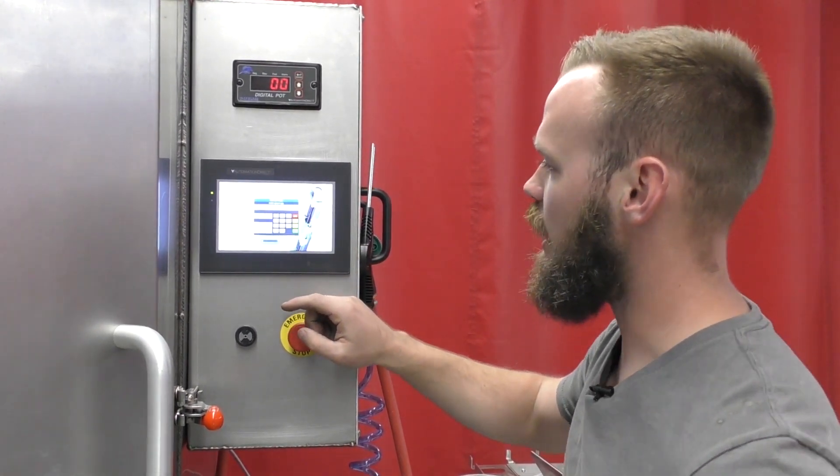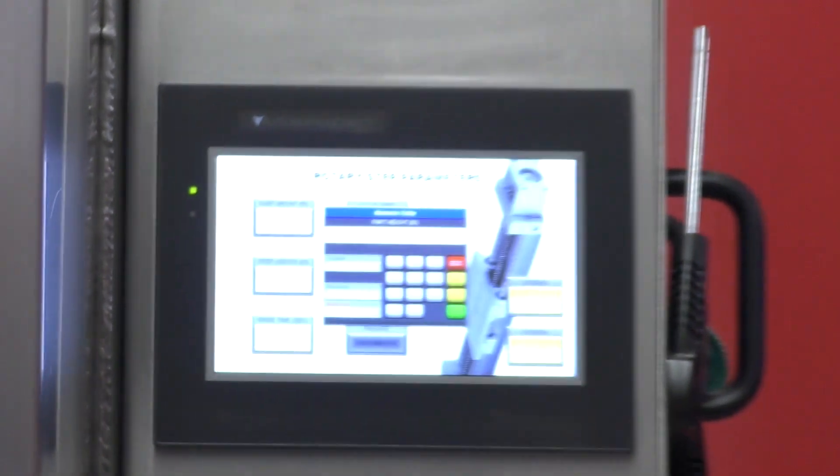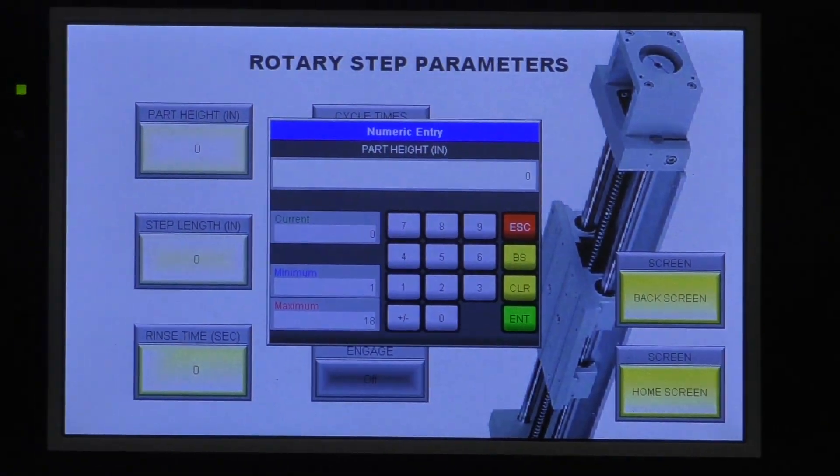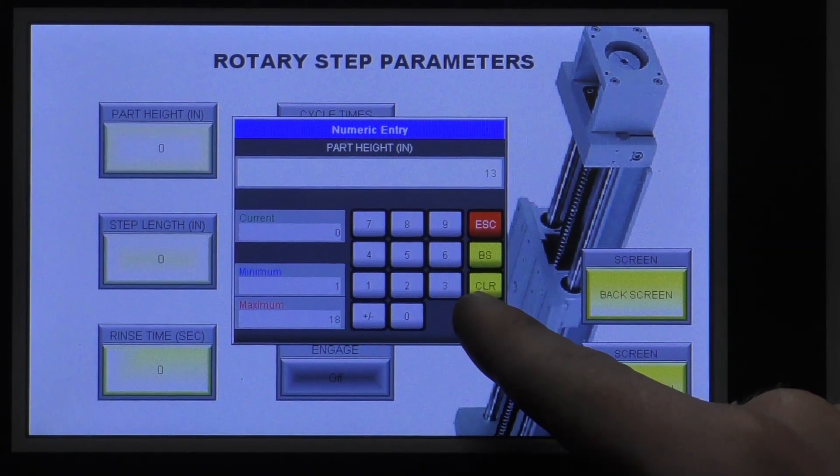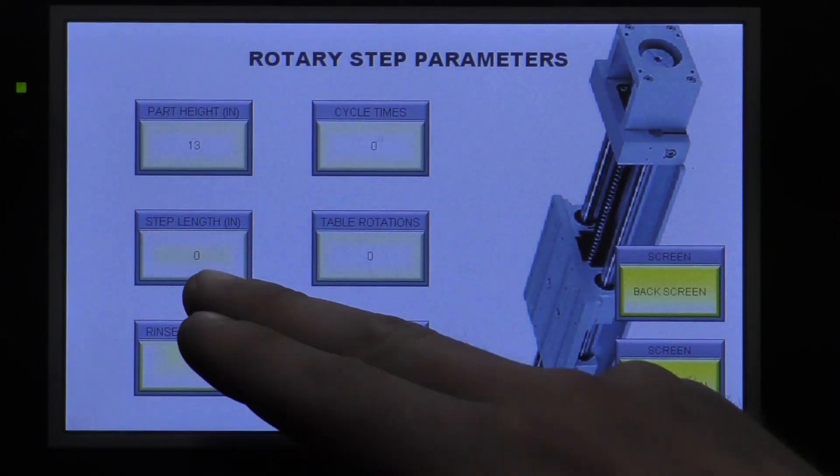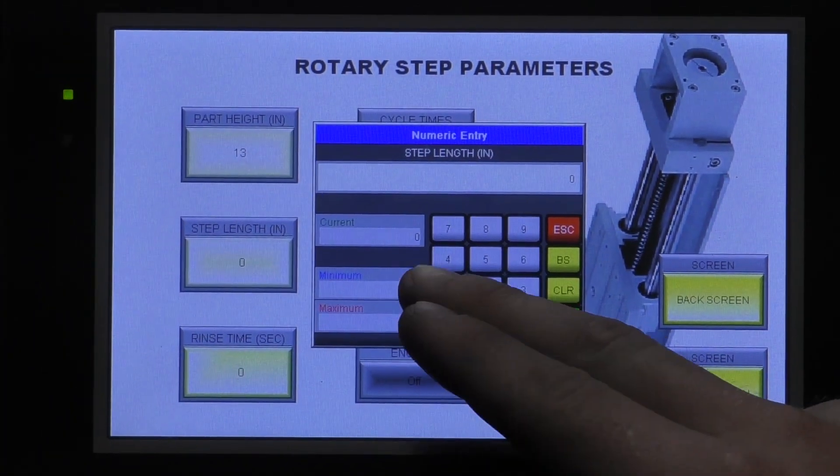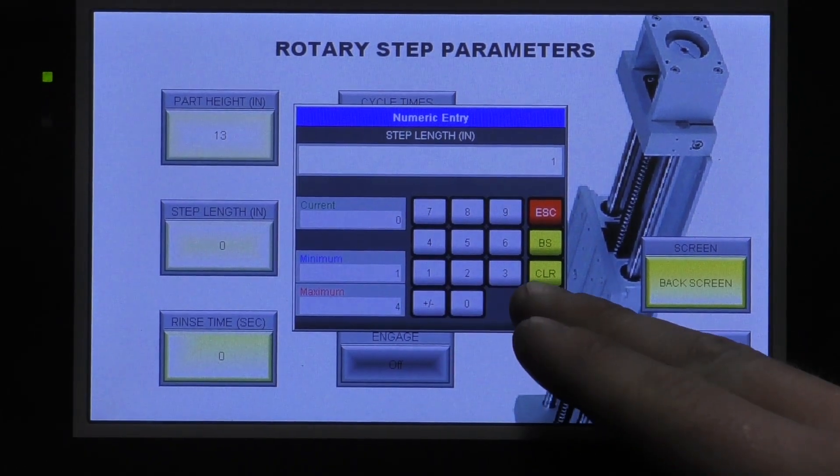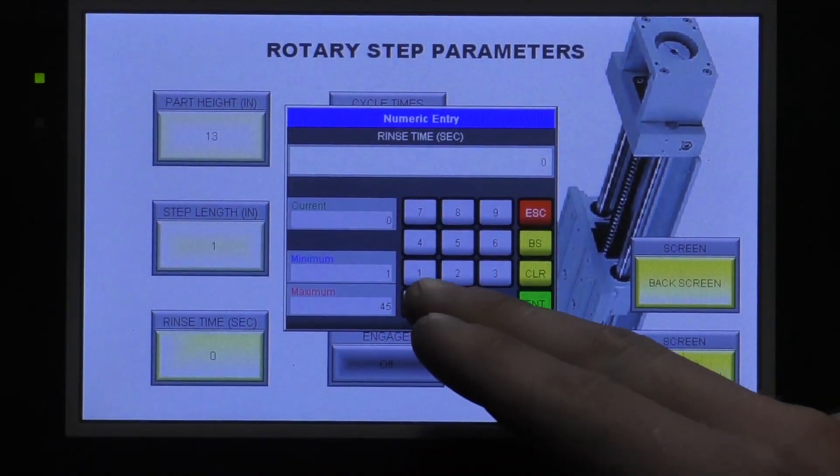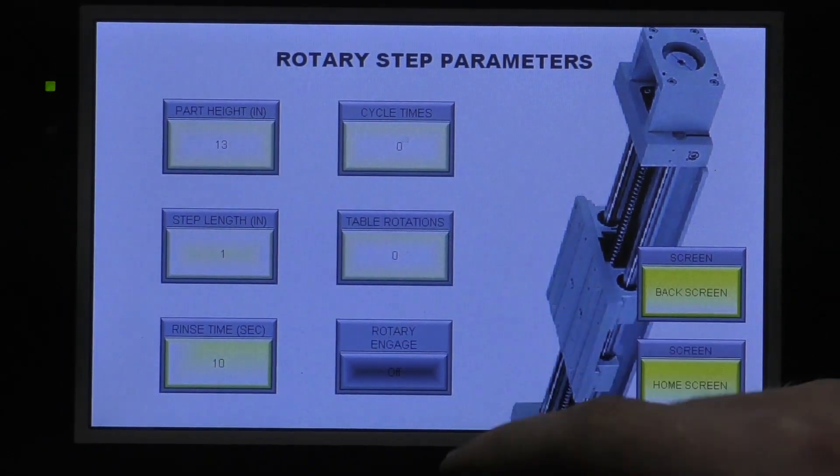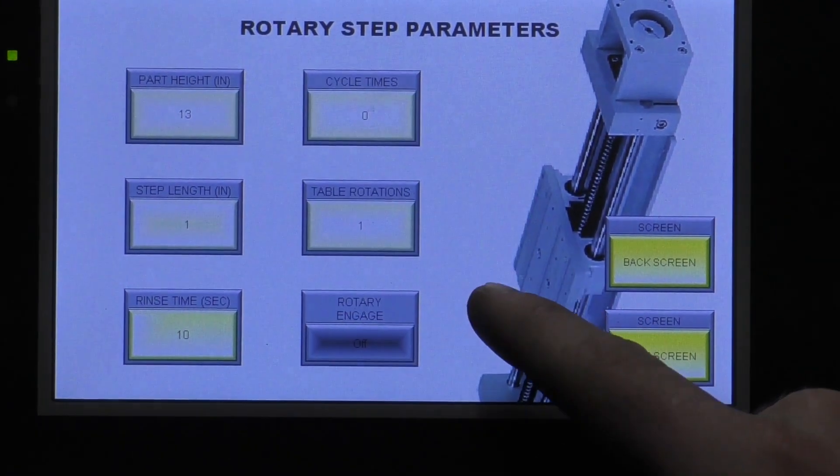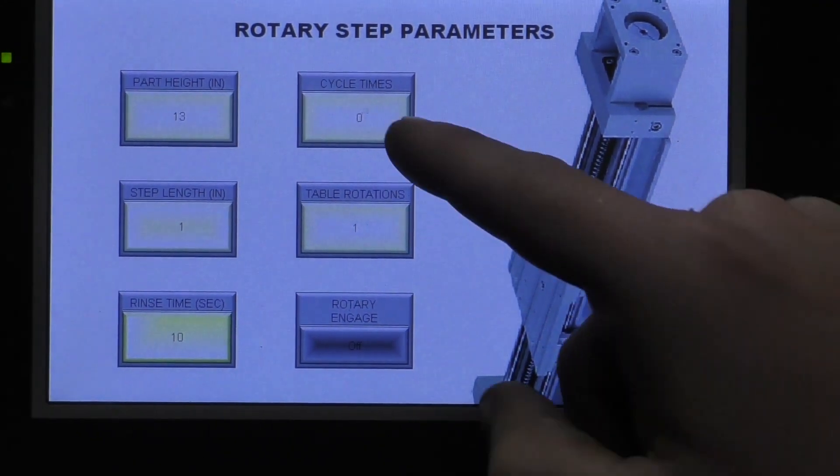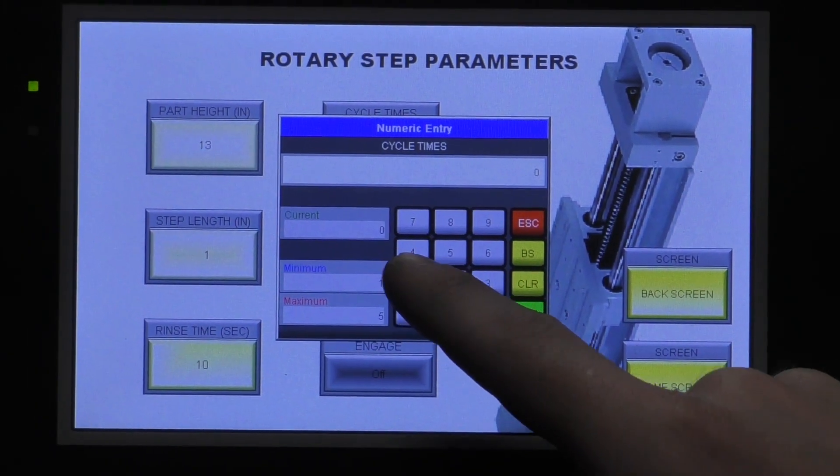I'm going to enter the part height. And approximately what I would say that this part is currently right now, I would say it's about 13 inches. And that's 13 inches tall. I want to step up one inch. Rinse time, we'll do a short rinse time of 10 seconds. I want it to rotate one time before it steps up. And then we want it to run one cycle.